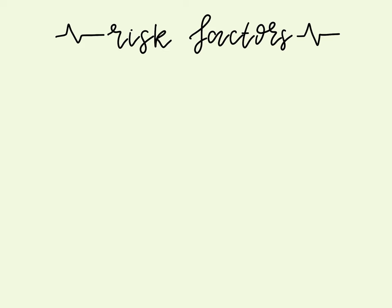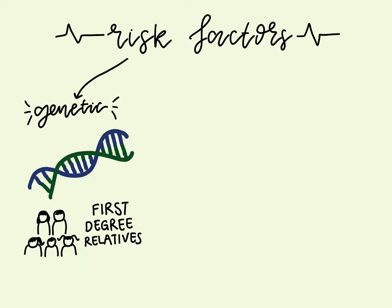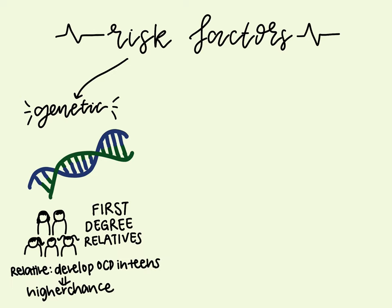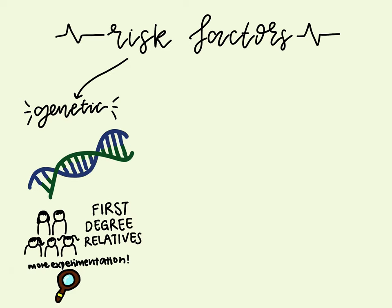Even though the exact cause of OCD has not been found, there are three main risk factors that lead to the development of OCD. Firstly, the condition is genetic, and studies have shown that people with first-degree relatives — such as parents, siblings, or children — who are affected by OCD have a higher risk of developing OCD. If the relatives developed OCD during their teens, the risk is increased further. More studies are being conducted to explore the connection between genetics and OCD to improve diagnosis and treatment.